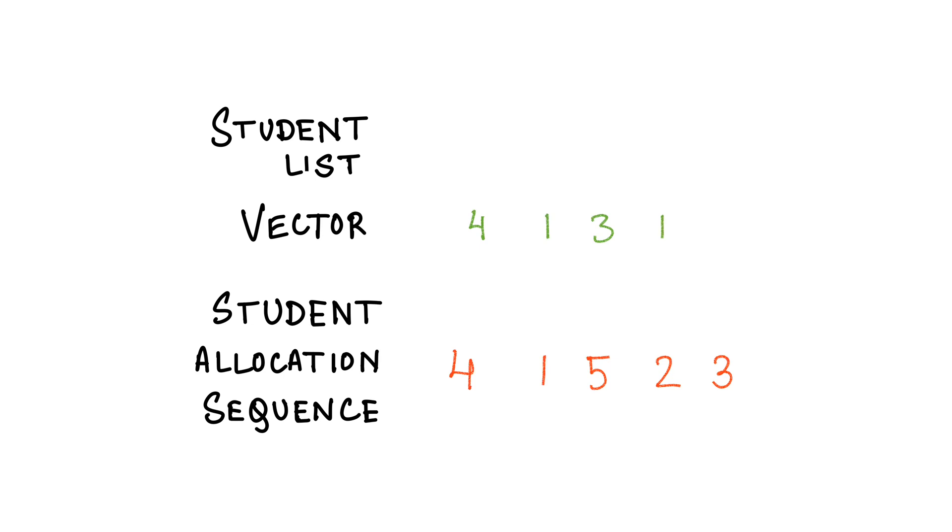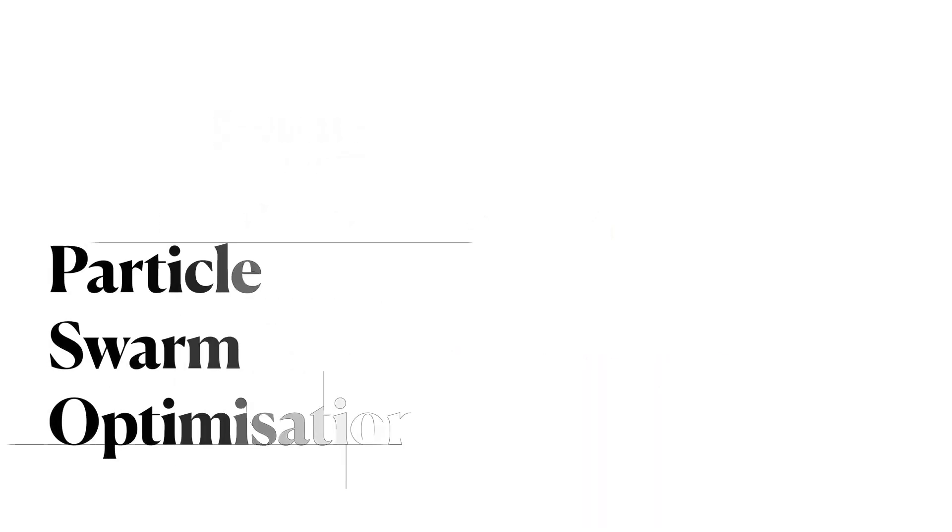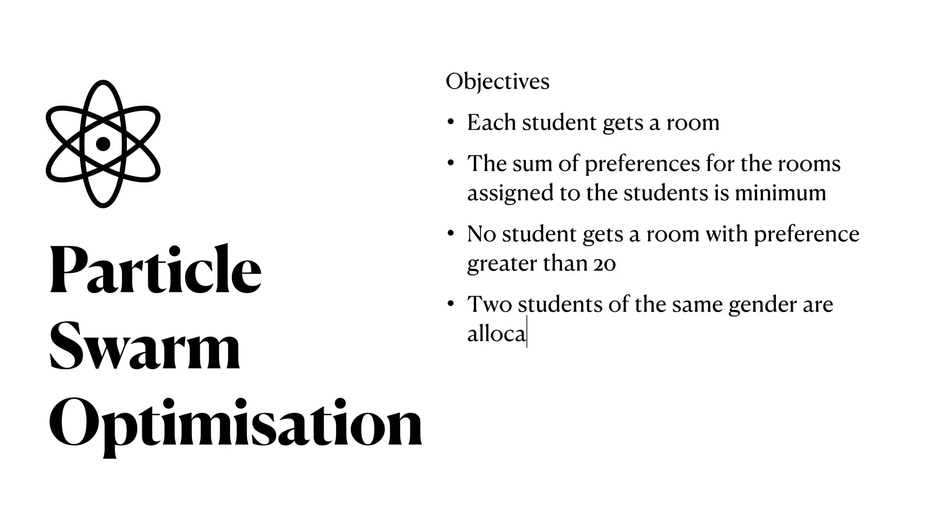This procedure can conveniently be performed using a linked list structure for the student list. Now we apply the particle swarm optimization technique. We have defined our input domain such that each student is guaranteed a room.